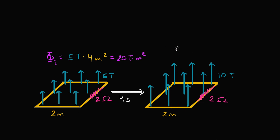Now what's the final flux? The final flux is going to be equal to, well, the average component of the magnetic field that is perpendicular — and the way I've defined this magnetic field the vectors are already perpendicular — is 10 teslas. The area of our ring hasn't changed, it's still four square meters. So times four square meters, our final flux is going to be 40 tesla meters squared.